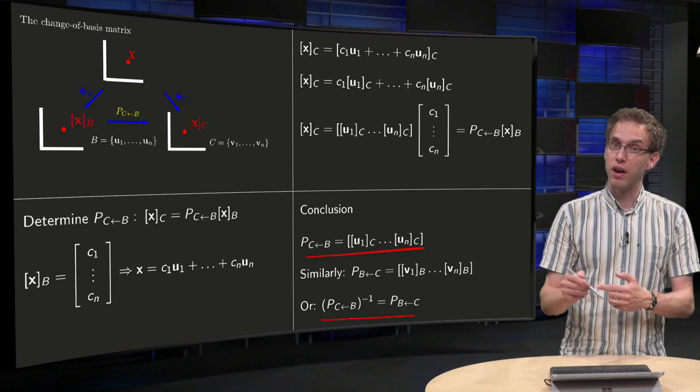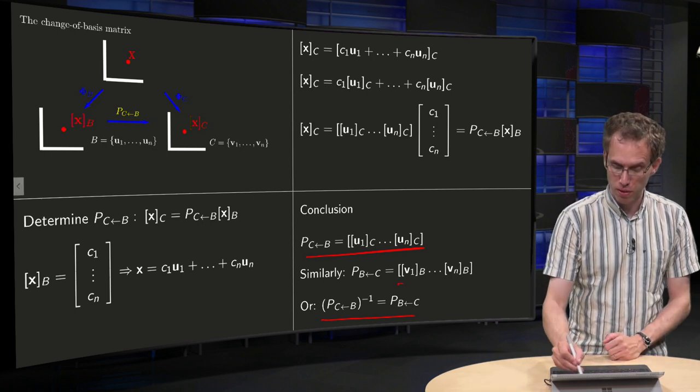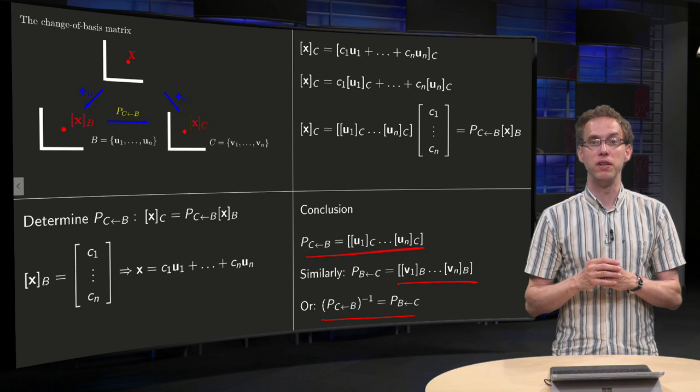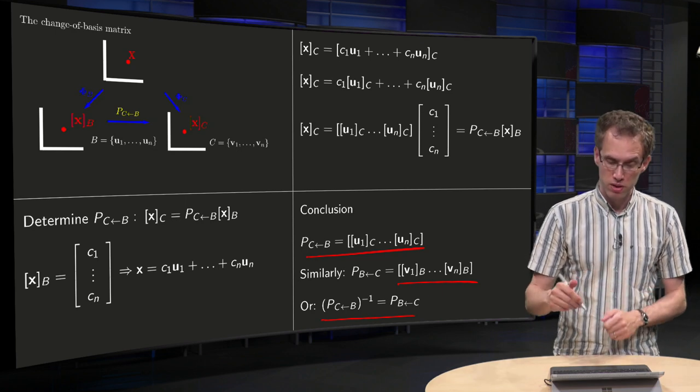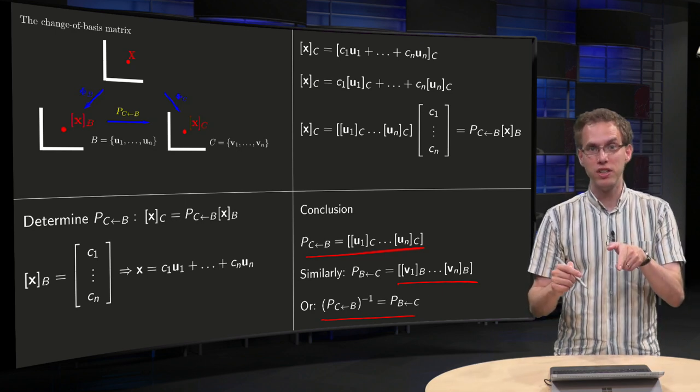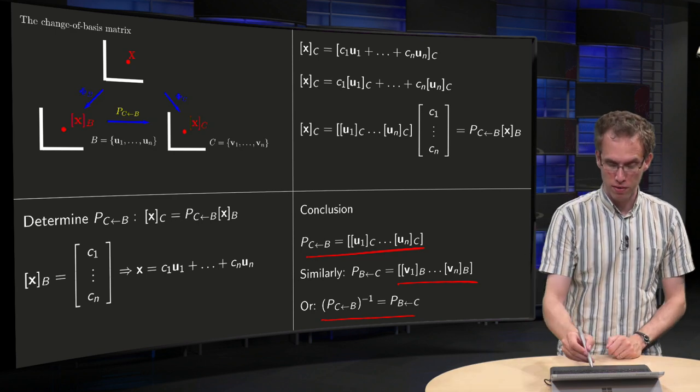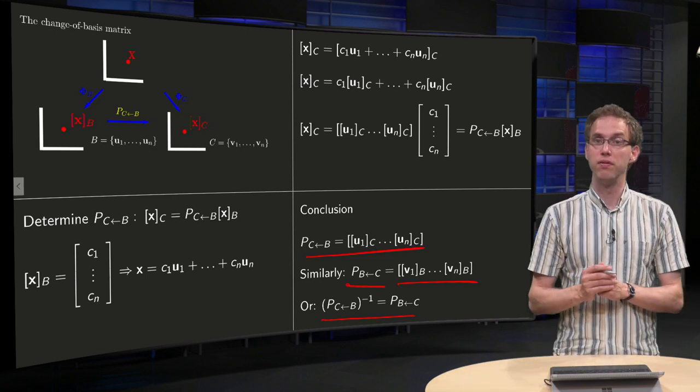Or just use the other formula: just replace the basis B and C. So instead of u in the basis C, you get v in the basis B if you want to compute your P from C to B.